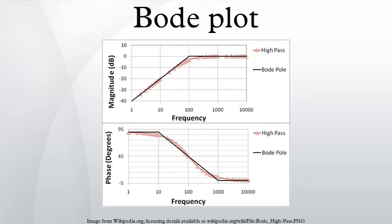Among his several important contributions to circuit theory and control theory, engineer Hendrik Wade Bode, while working at Bell Labs in the United States in the 1930s, devised a simple but accurate method for graphing gain and phase shift plots. These bear his name: Bode gain plot and Bode phase plot. Bode is pronounced B-O-H-D.